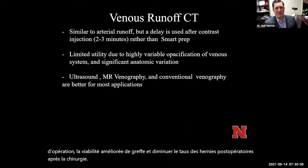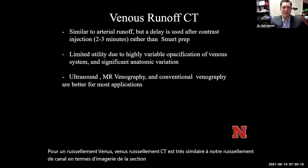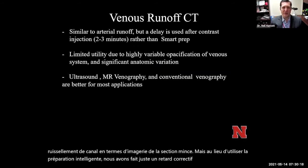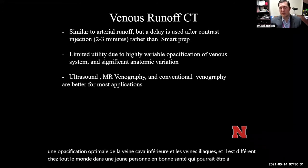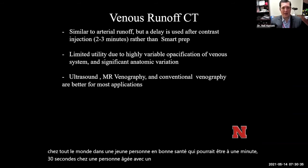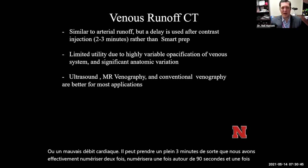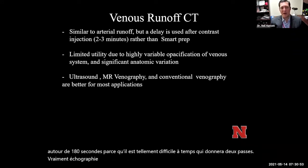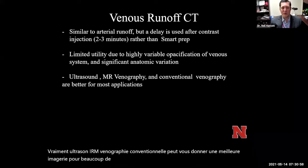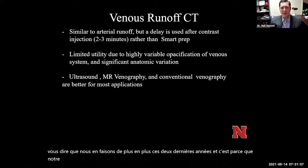For venous runoff CT, the protocol is very similar to the runoff in terms of thin section imaging, but instead of smart prep we use a fixed delay. It's very hard to get optimal opacification of the inferior vena cava and iliac veins — it's different in everybody. In a young healthy person it might be around 90 seconds; in an older person with bad peripheral circulation or cardiac output, it might take a full three minutes. So we actually scan twice: once around 90 seconds and once at around 180 seconds. Ultrasound, MR venography, and conventional venography can give better imaging for many of these applications, but we're doing more and more of these as our technology has improved.